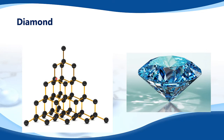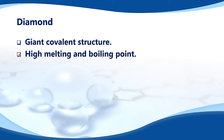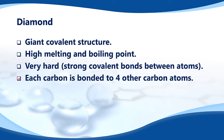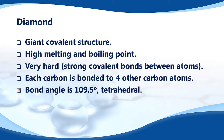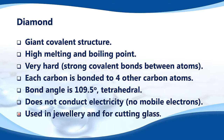Diamond does not conduct electricity because it has no delocalized electrons. In summary: diamond has a giant covalent structure; it has a high melting and boiling point; it is very hard; each carbon is bonded to four other carbon atoms at 109.5 degrees (tetrahedral); it does not conduct electricity because it has no mobile electrons; and it is used in jewelry and for cutting glass.